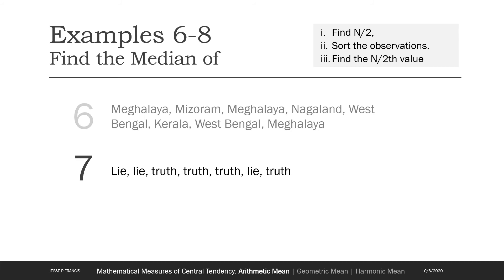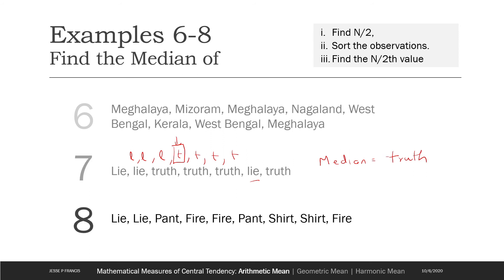Let's take a look at another one: lie, truth, truth, truth, and many lies. Can we find the median? In fact, lie and truth are comparable — one is better or worse than the other. If I make lie less than truth and sort the distribution, I have: lie, lie, lie, lie, truth, truth, truth, truth, truth, truth — seven observations and the value towards the middle is truth. So the median is truth. This is an ordinal scale. But if lie is paired with something incomparable like fire, that's nominal scale and we cannot find the median.